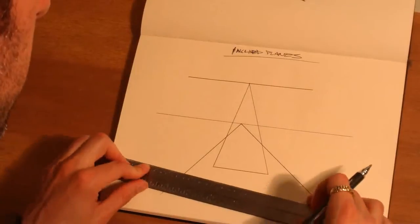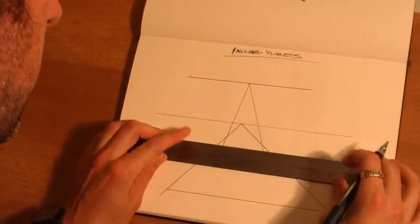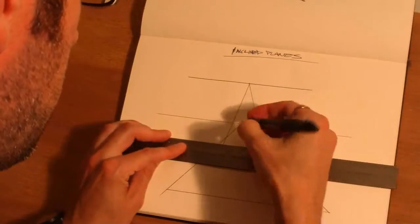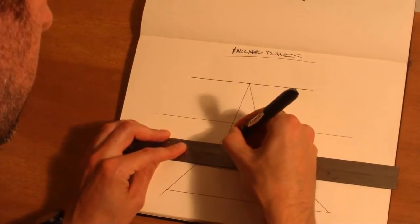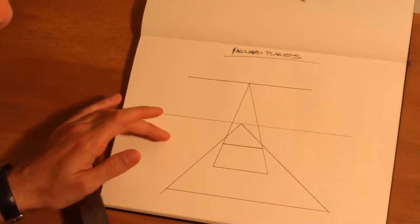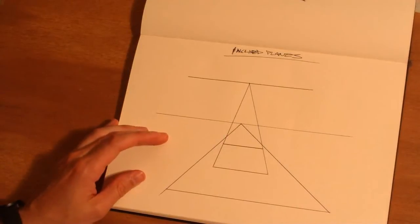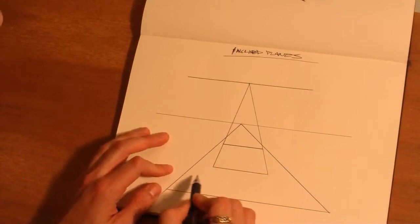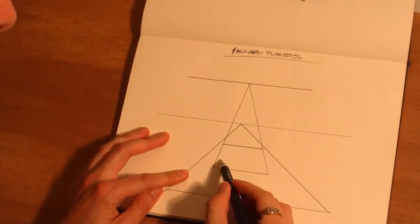And then if we wanted to cut this plane off, we're going to put that right here. So you can start to see that with respect to this plane, this plane is inclined.